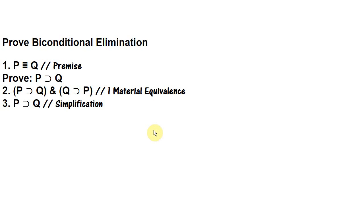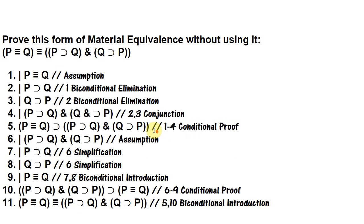Now we're going to go over a couple of proofs for the rules of material equivalence, which is one of the rules of replacement with two forms. First we'll go over this one quickly — we want to prove the form of material equivalence that we normally use when trying to prove other rules of replacement. We're using biconditional elimination and biconditional introduction to prove this, and it's a quick straightforward proof.